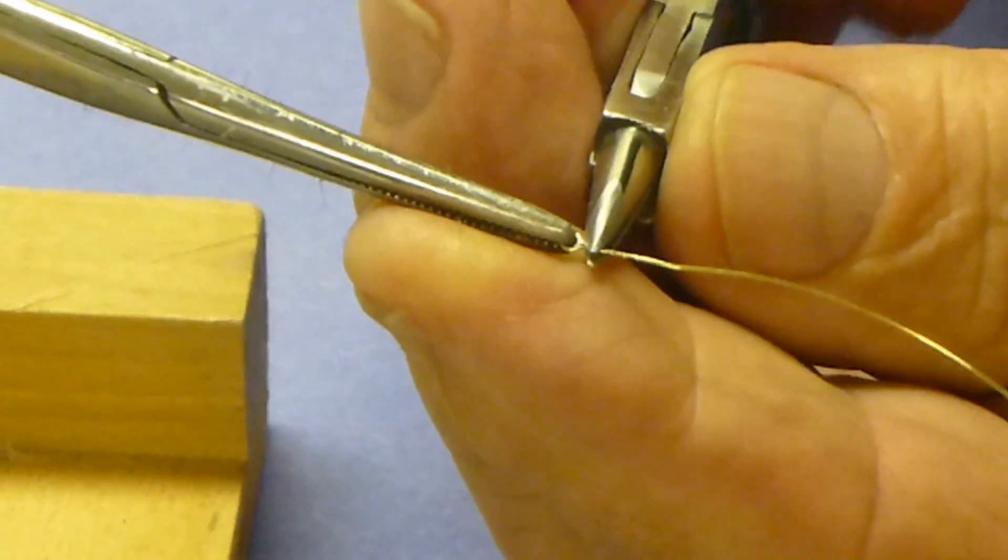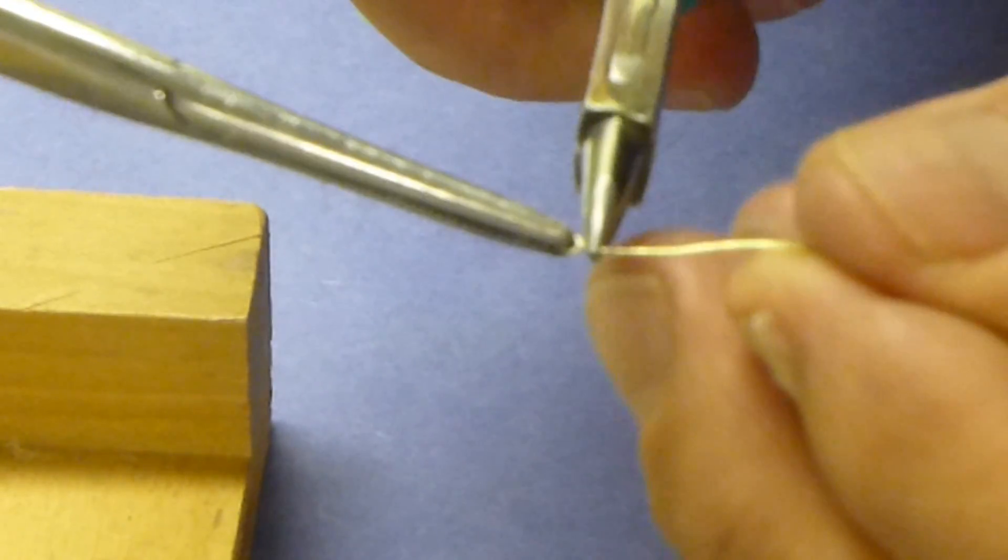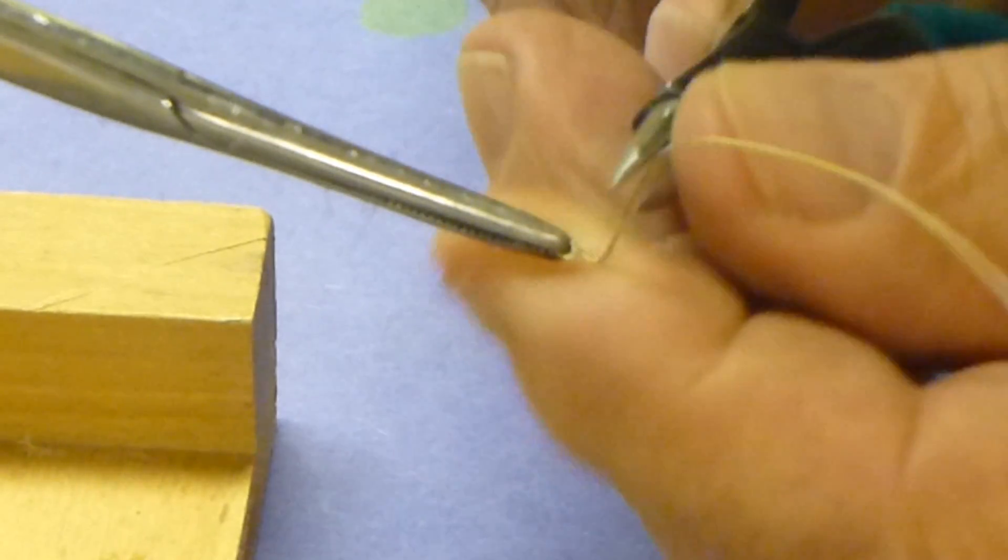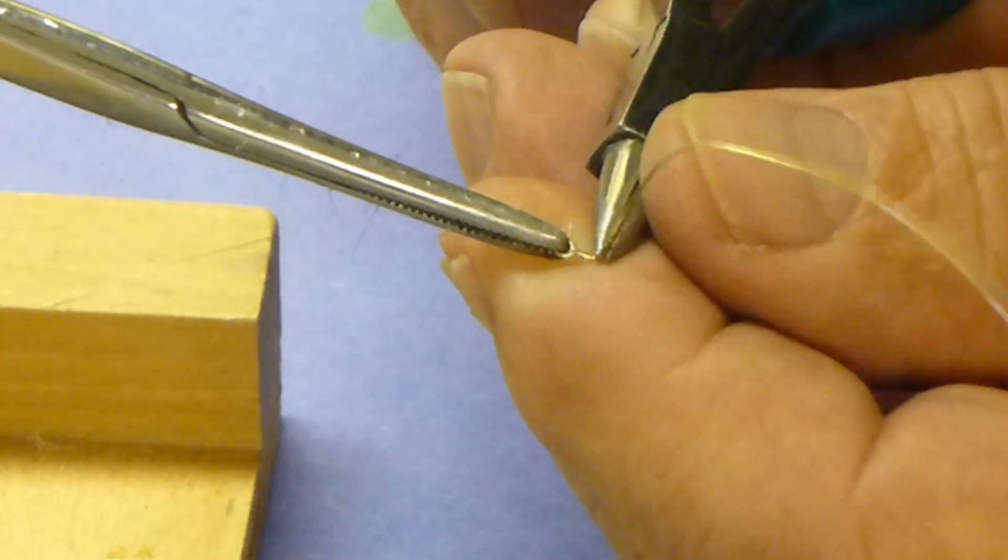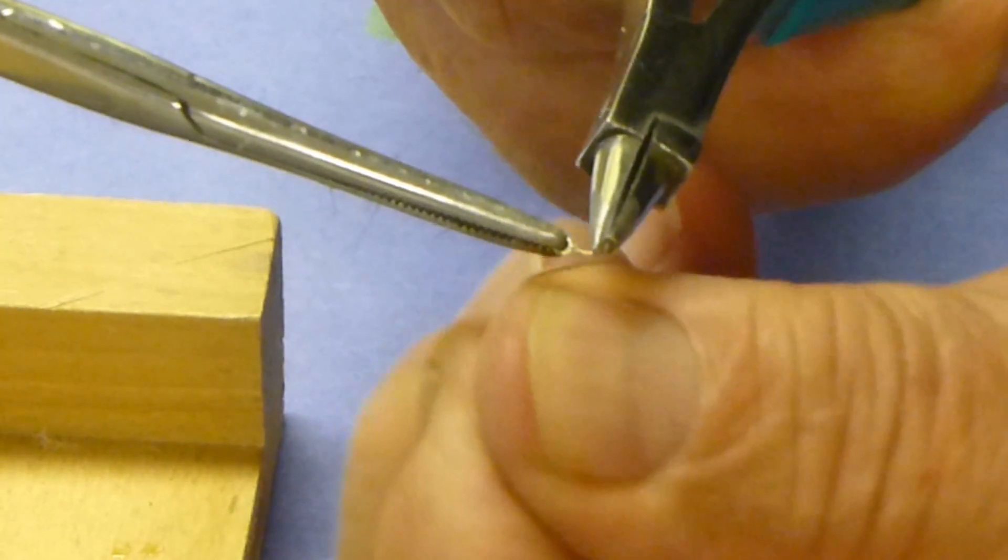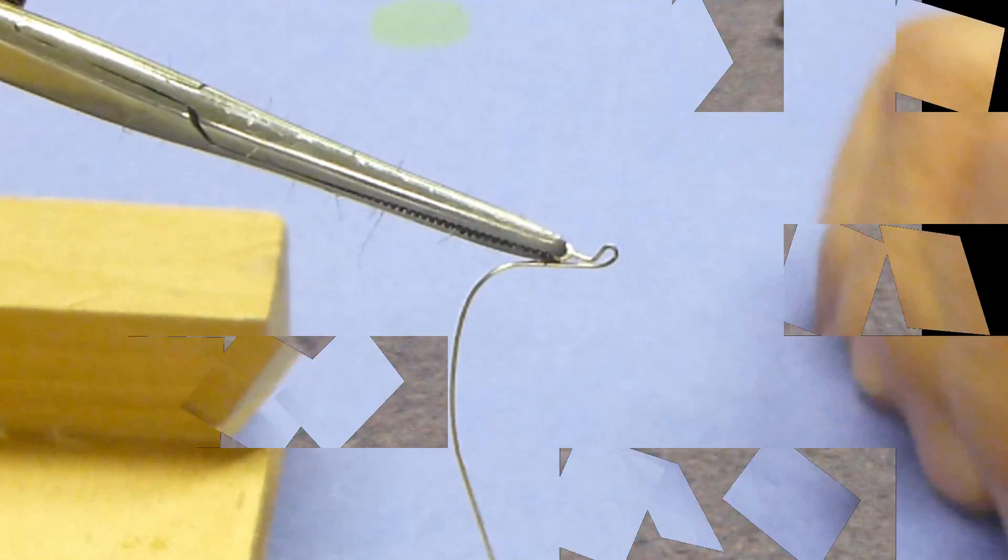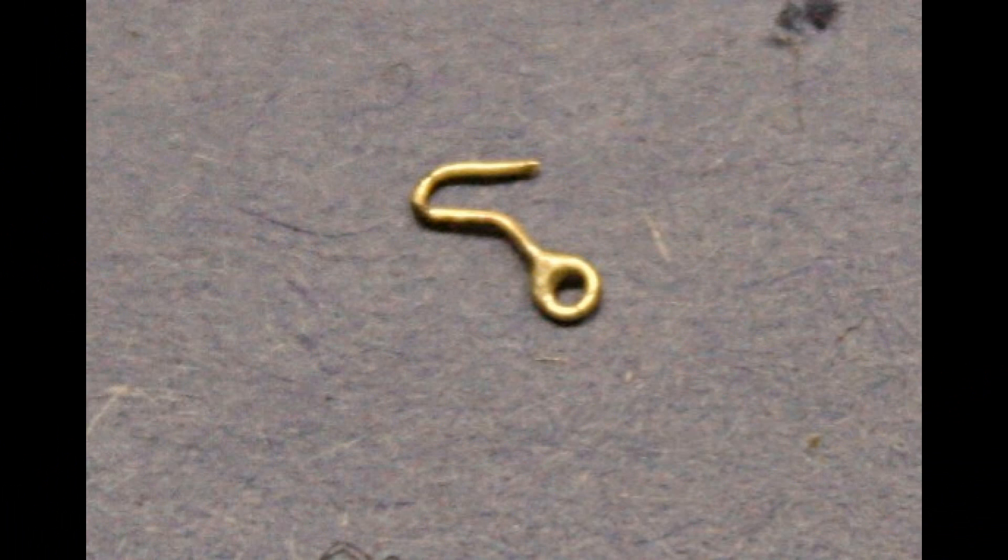Then I take and put this in a hemistat and start forming the hook. I make the first little bend and then wrap it around. Then I make a cut at an angle, and the finished hook comes out just fine with this braised loop.